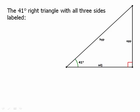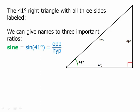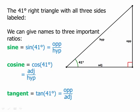Now the three principal ratios here are the sine ratio—sine of 41 degrees equals opposite over hypotenuse. The cosine equals adjacent over hypotenuse. The tangent equals opposite over adjacent.